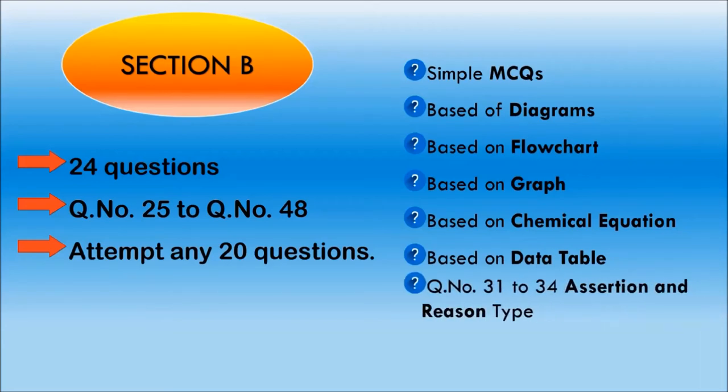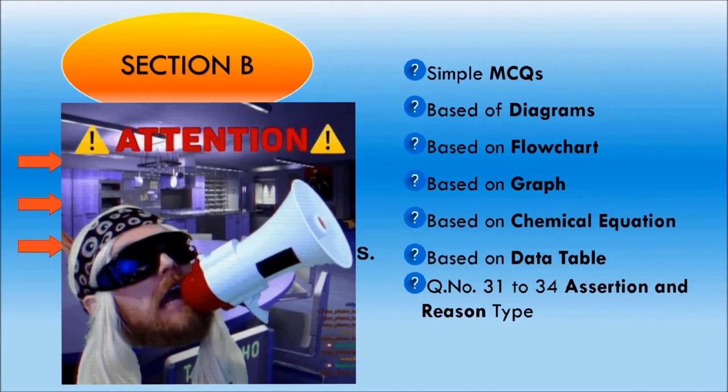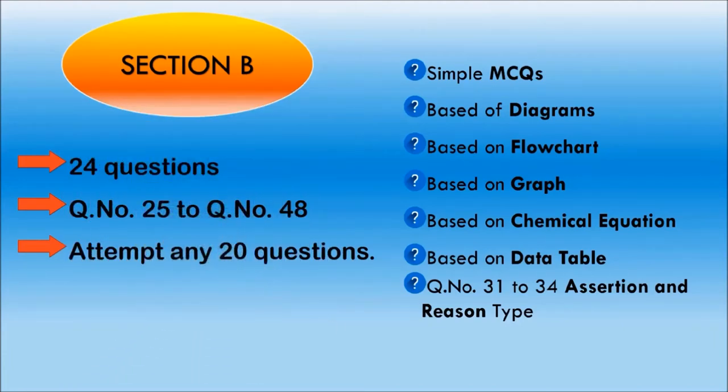The new thing about Section B is, Section B consists of Assertion and Reason type too. According to the sample paper, question number 31 to 34 consists of Assertion and Reason type. Now, what is this Assertion and Reason type question? In Assertion and Reason type questions, two statements will be given to you. Statement 1 will be called Assertion and Statement 2 will be called Reason. After reading these two statements, you have to mark one of the options. And what will be the options? Option A.